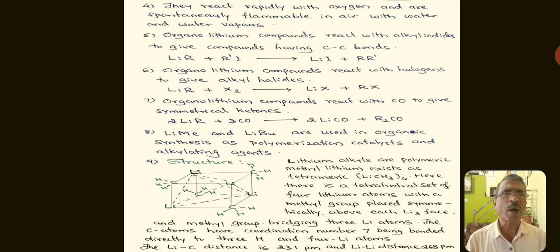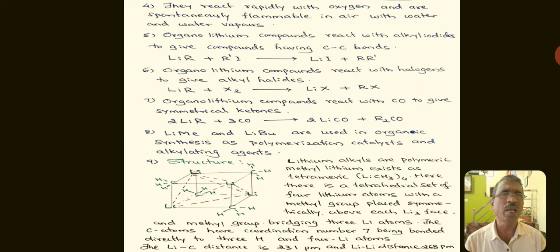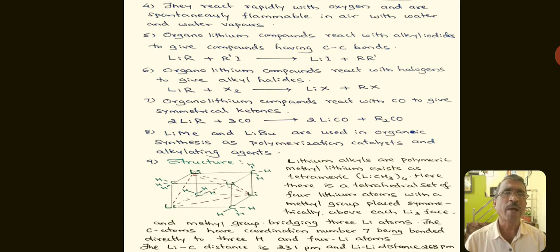Organolithium compounds react with carbon monoxide to give symmetrical ketones. When alkyl lithium is treated with carbon monoxide, it gives an alkyl carbonyl ketone. For example, methyl lithium gives acetone and ethyl lithium gives diethyl ketone.